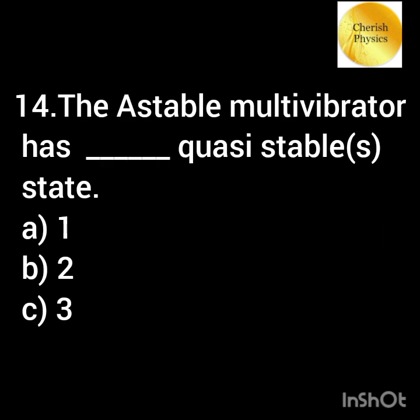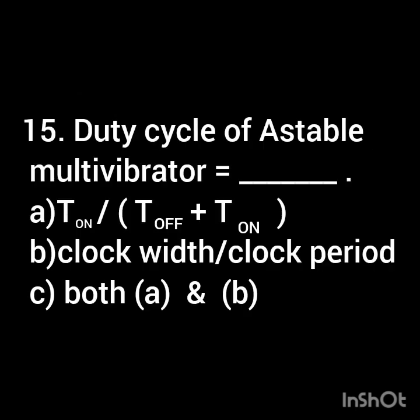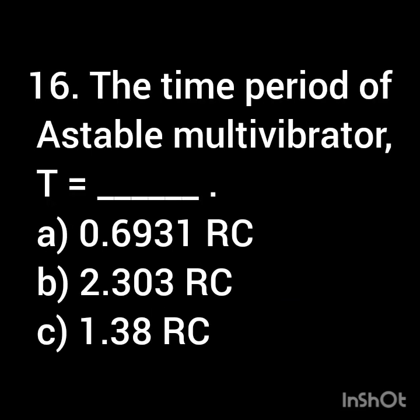The unstable multivibrator has dash number of quasi-stable states. Duty cycle of an astable multivibrator is — with t equal to dash.